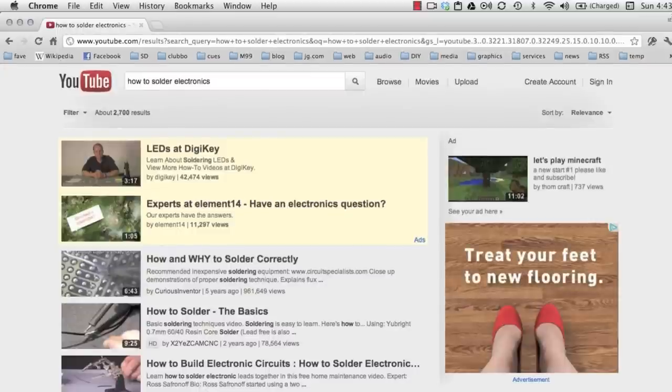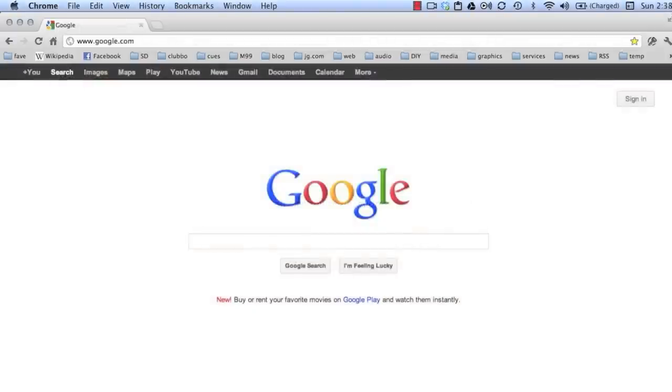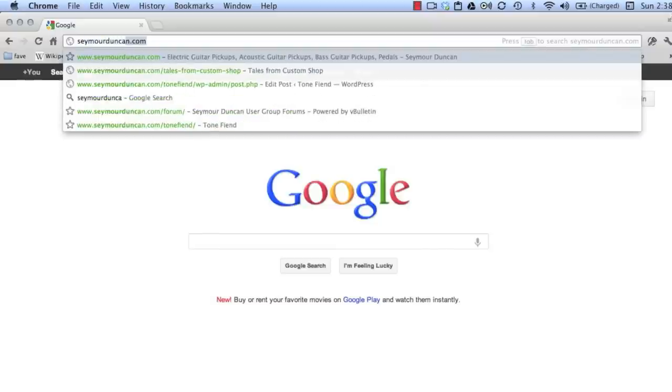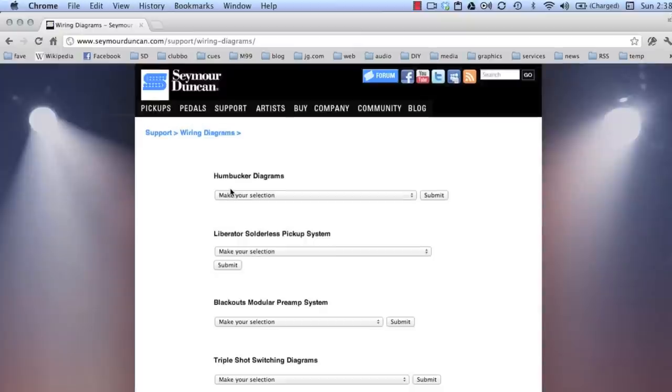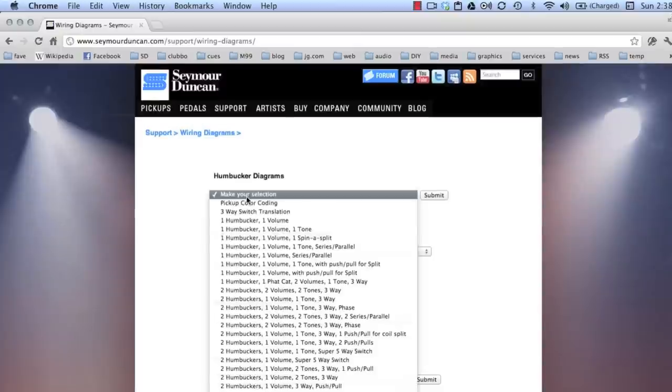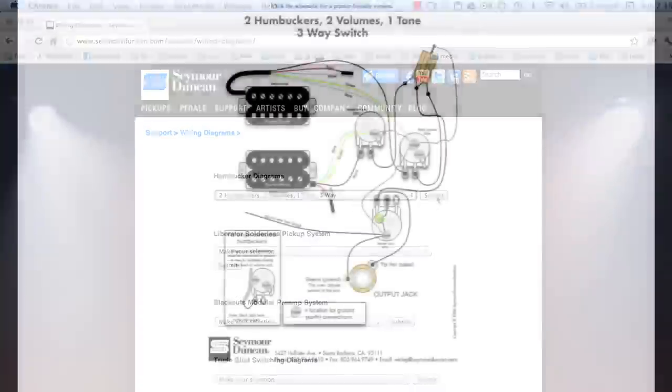We'll also review a couple of basics as we proceed. A good starting point is to download a wiring diagram appropriate for your guitar and your pickups. Just go to SeymourDuncan.com, click on Support, and then Wiring Diagrams. In this demo, I'll be replacing the bridge pickup in a dual humbucker guitar with two volume controls, one tone control, and a three-way switch, so I'll choose that option.